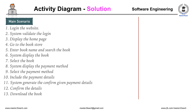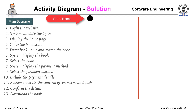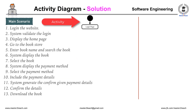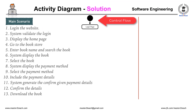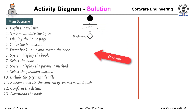Let's start the activity diagram with the start node. The first step is to login to the website, so add the activity named 'login,' connected by a control flow arrow. The user should be registered to the system to login, which is the precondition, so we add a decision node for whether the user is registered or not. If not, process the registration activity named 'register.'